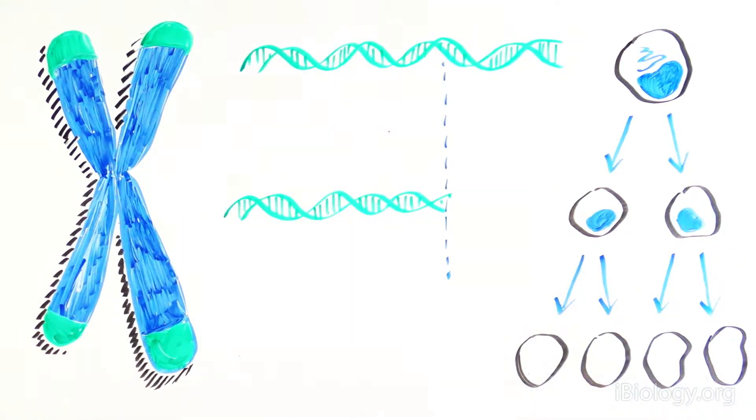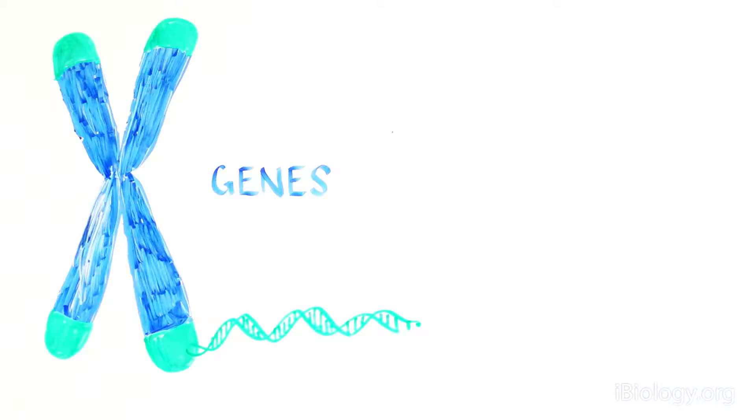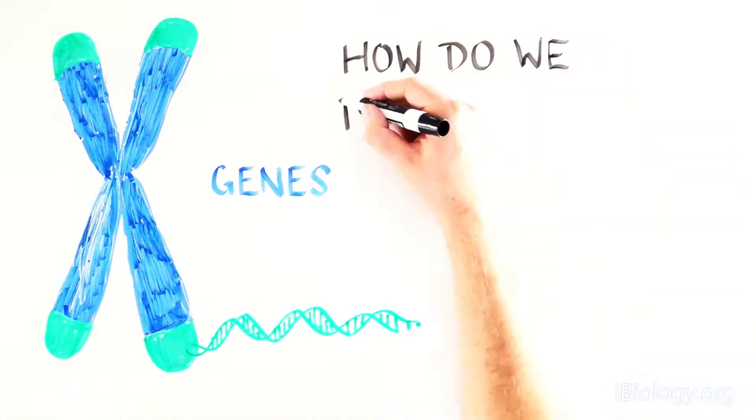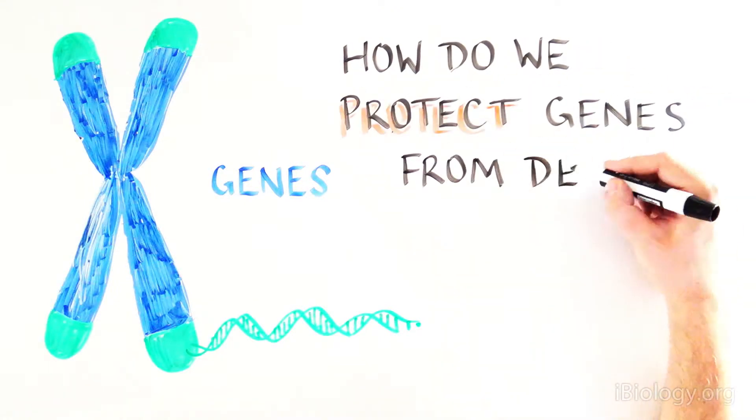So after multiple cell divisions, the chromosomes get shorter and shorter. This poses one of the biggest conundrums in biology. As cells divide, how do we safeguard all of the information encoded in our DNA that is so important to our survival? How are genes protected from deletion at the chromosome end?